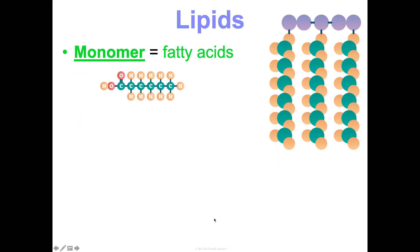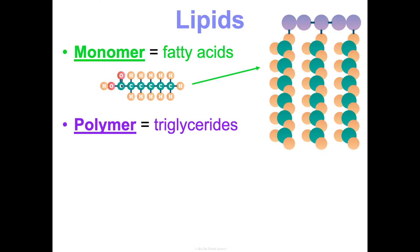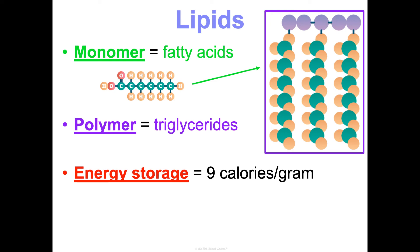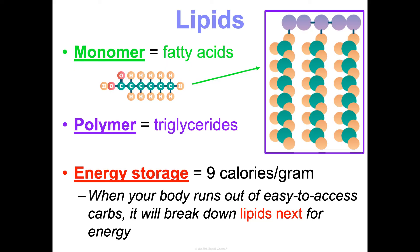There's no true monomer for lipids because they can vary in structure, but if we had to pick one, it would be fatty acids — basically carbon chains surrounded by a bunch of hydrogens. The polymer tends to be triglycerides — three fatty acid chains plus glycerols. Energy storage for lipids is nine calories per gram, which is way more than carbs. That makes sense since we think of them for long-term storage. When your body runs out of those easy-to-access carbs, it's going to break down fats and lipids next for energy.